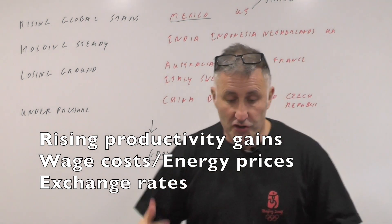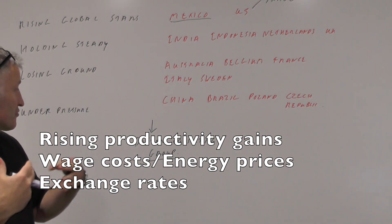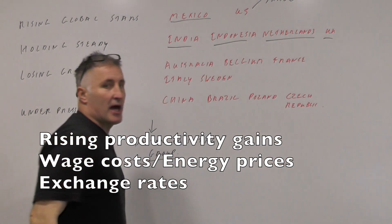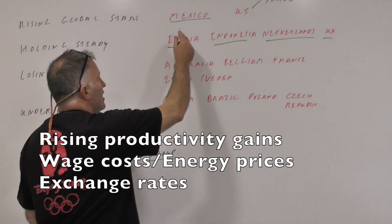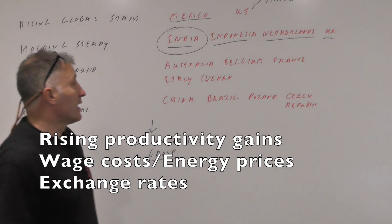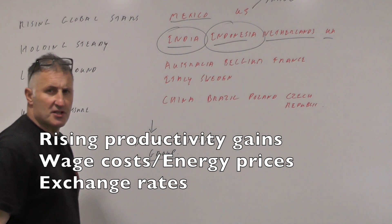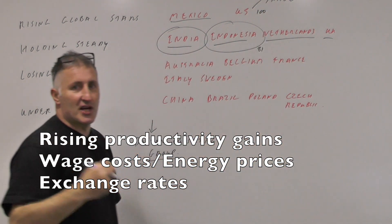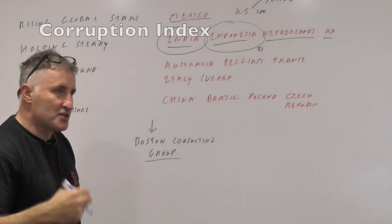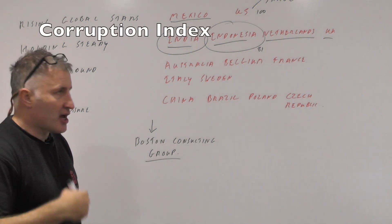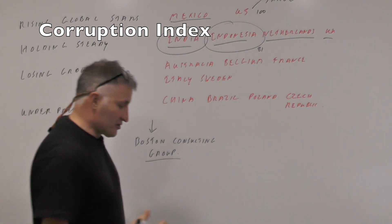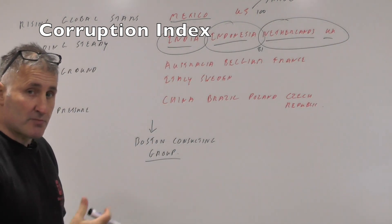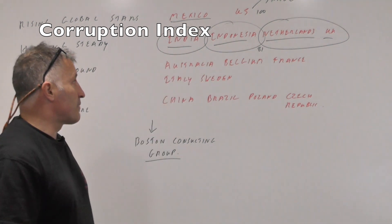Countries holding steady — often called regional stars in the Boston Consulting Report — include India, Indonesia, the Netherlands, and the UK. India benefits from large rises in productivity. Indonesia is one of the cheapest places to do business, scoring 81 on the competitive scale versus America's 100. The UK and Netherlands score well on corruption indices and infrastructure, and the UK has also benefited from a lower exchange rate.